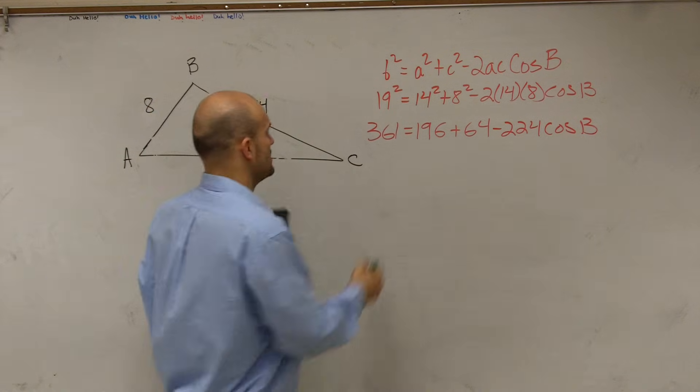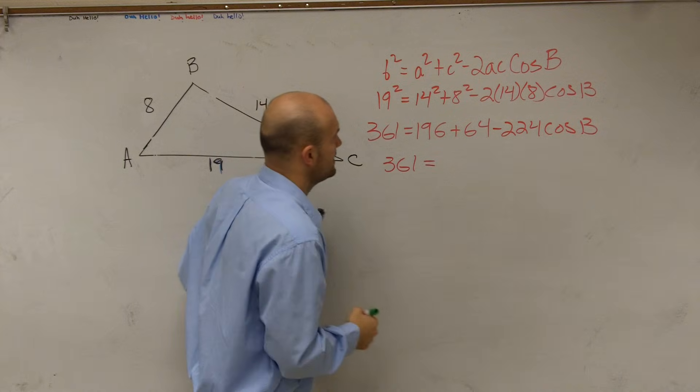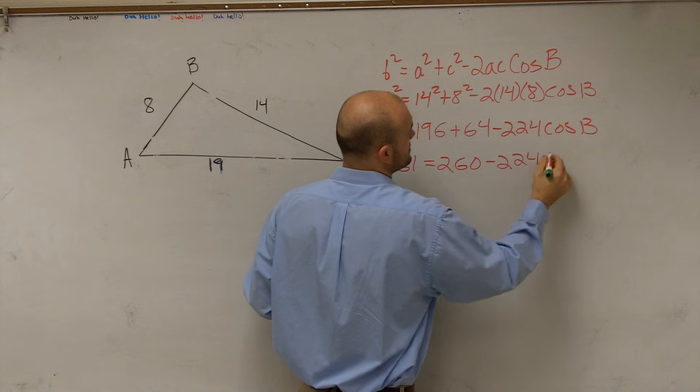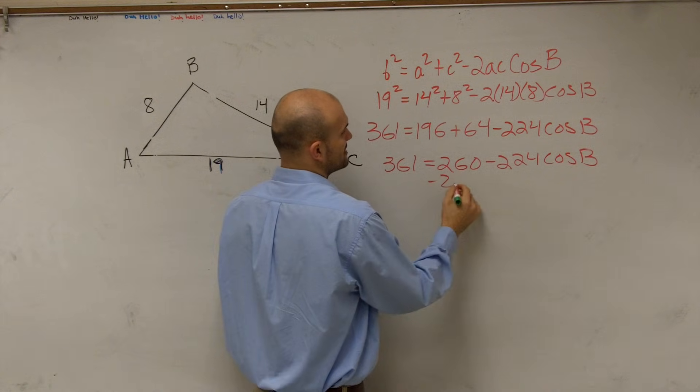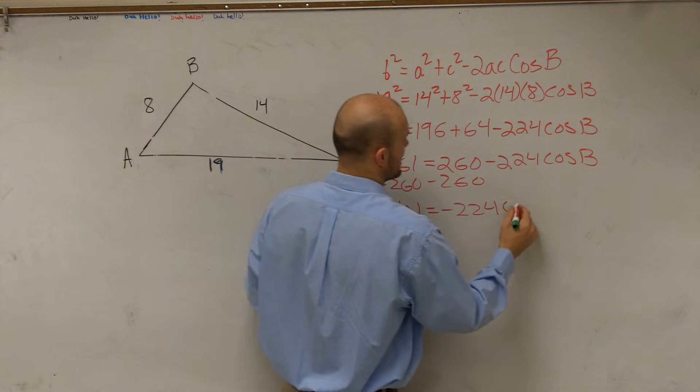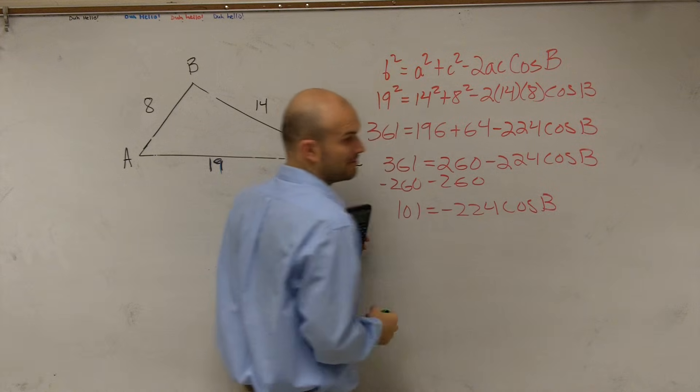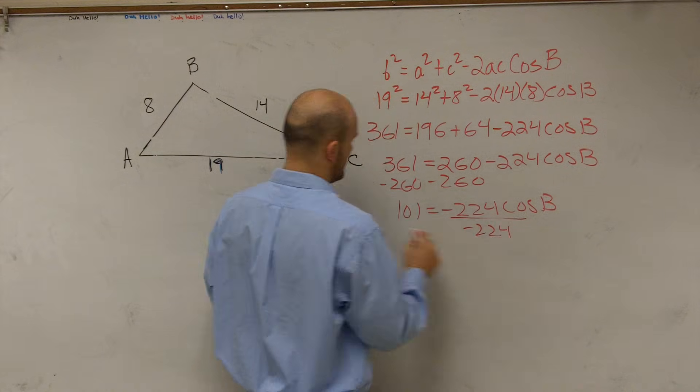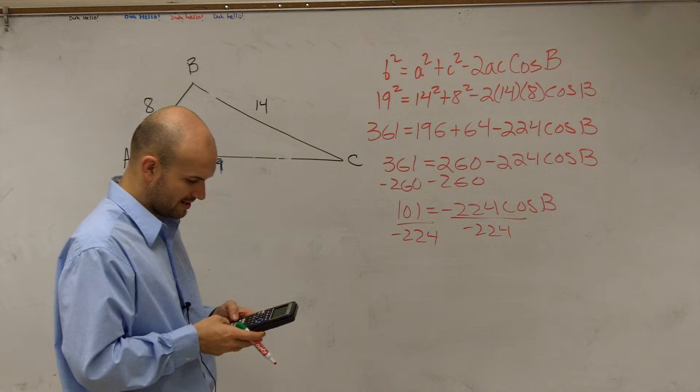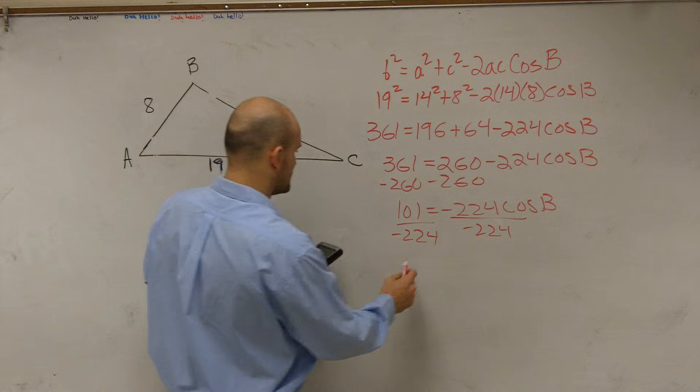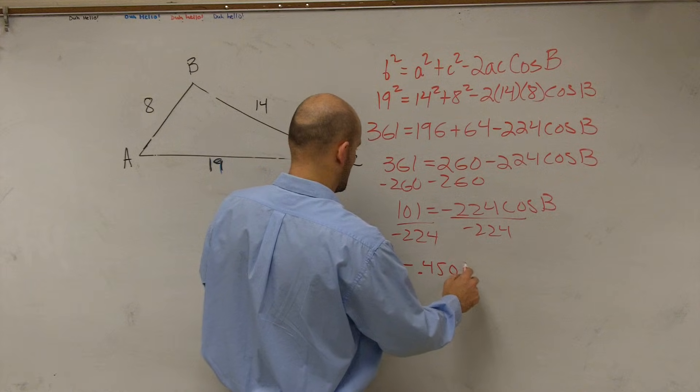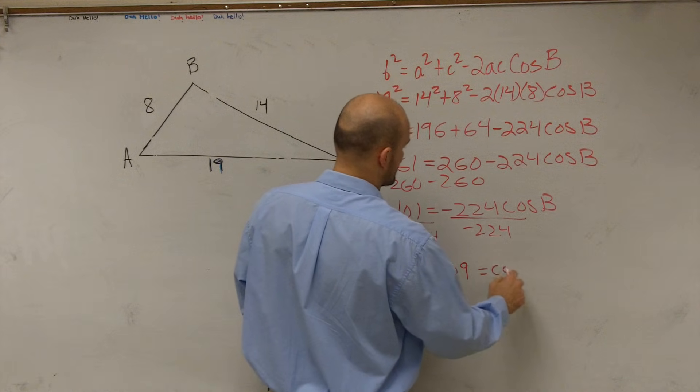Now I can just add these up. So simplify. So I get 361 equals 260 minus 224 times the cosine of B. Subtract 260 to the other side. I get 101 equals negative 224 times the cosine of B divided by negative 224.